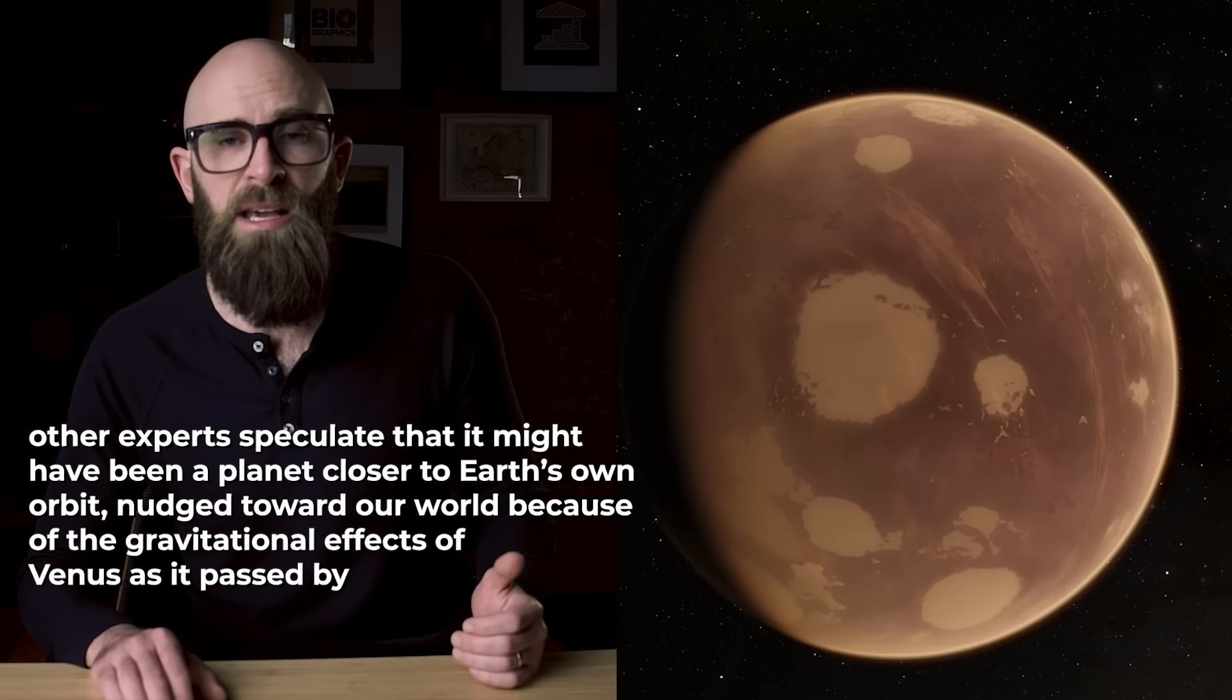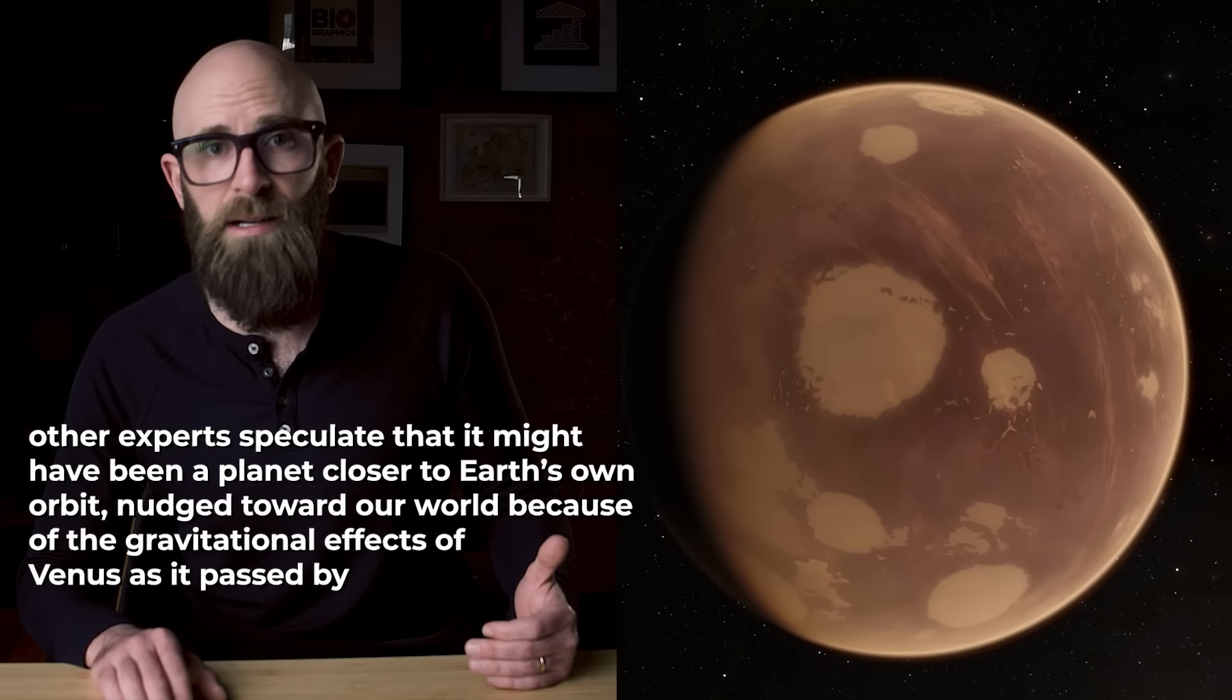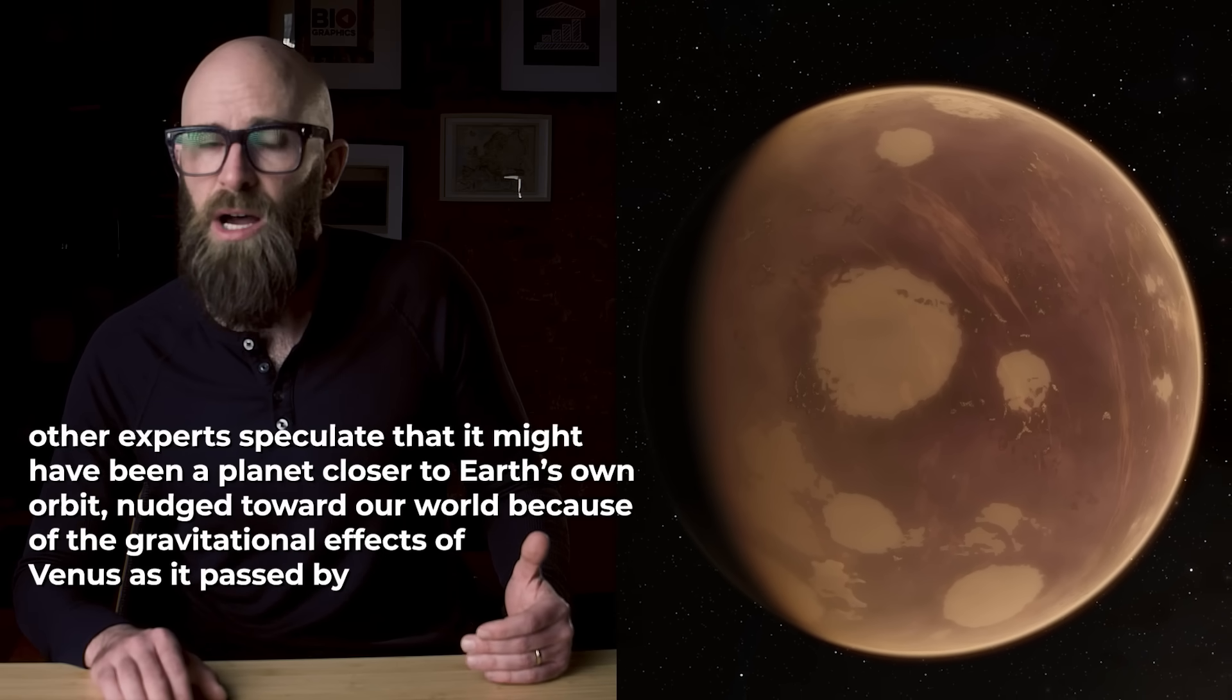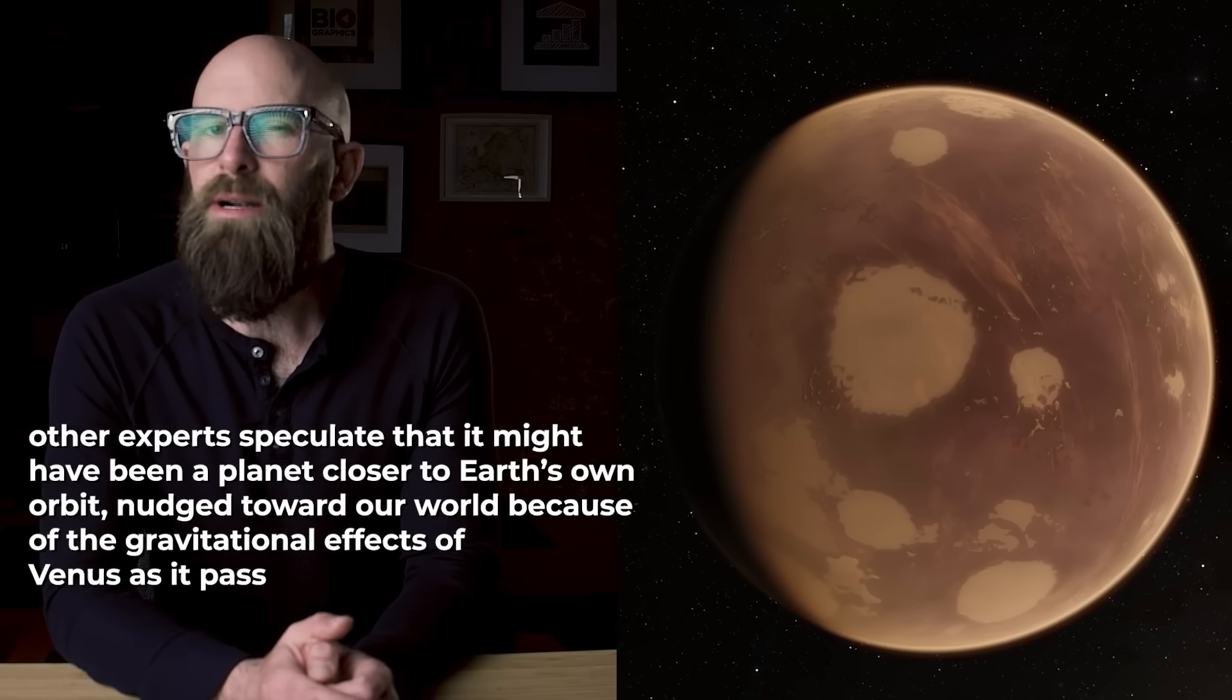Another expert speculates that it might have been a planet closer to Earth's own orbit nudged toward our world because of the gravitational effects of Venus as it passed by. Still others wonder whether it might have been a rogue planet, one that wandered into our solar system and was ensnared by the sun, but on a trajectory that put it on an eventual spiraling collision course with Earth.